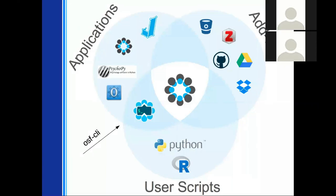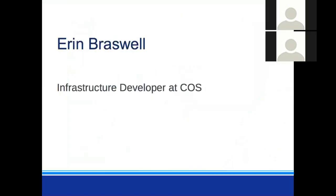We have user scripts that you can use or write in a couple of different languages. There are libraries for Python and R with different levels of functionality — ways of implementing our public API in a language you might be familiar with. We also have the OSF CLI, which Tim will be talking about later. It provides a Python library for interacting with the OSF, but it's also a standalone command line client you can use to integrate directly into your experimental workflow without needing to write your own scripts.